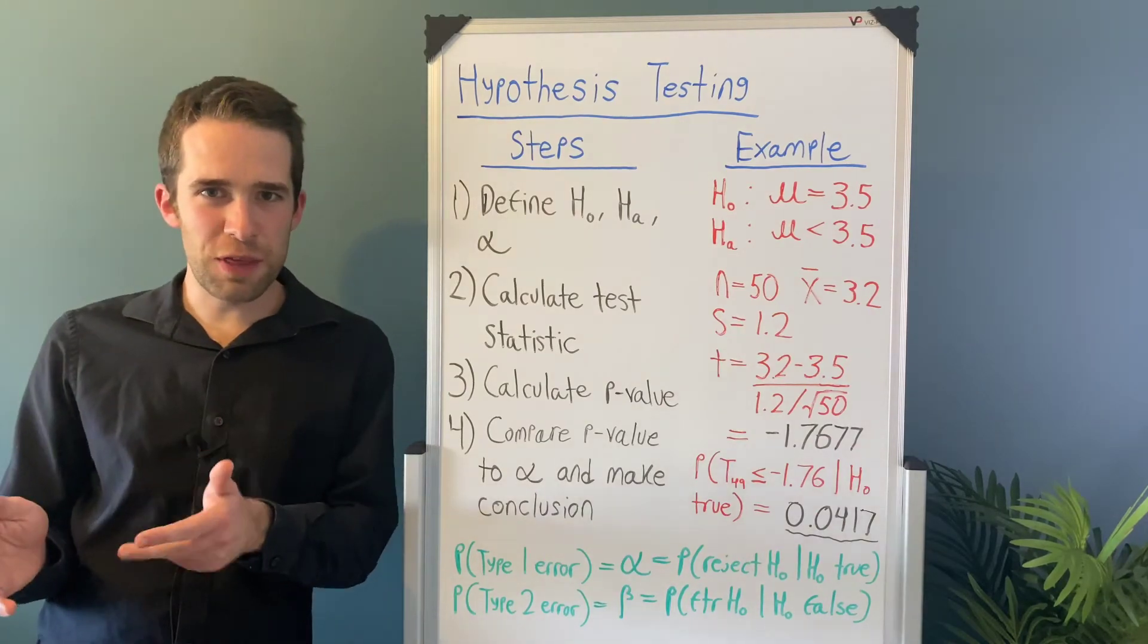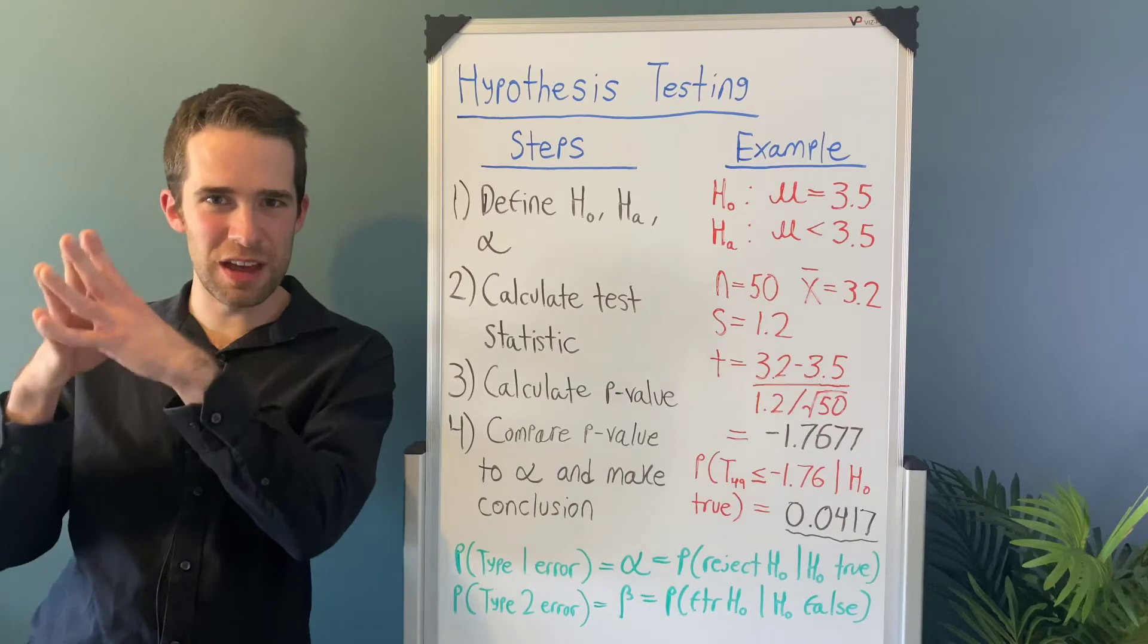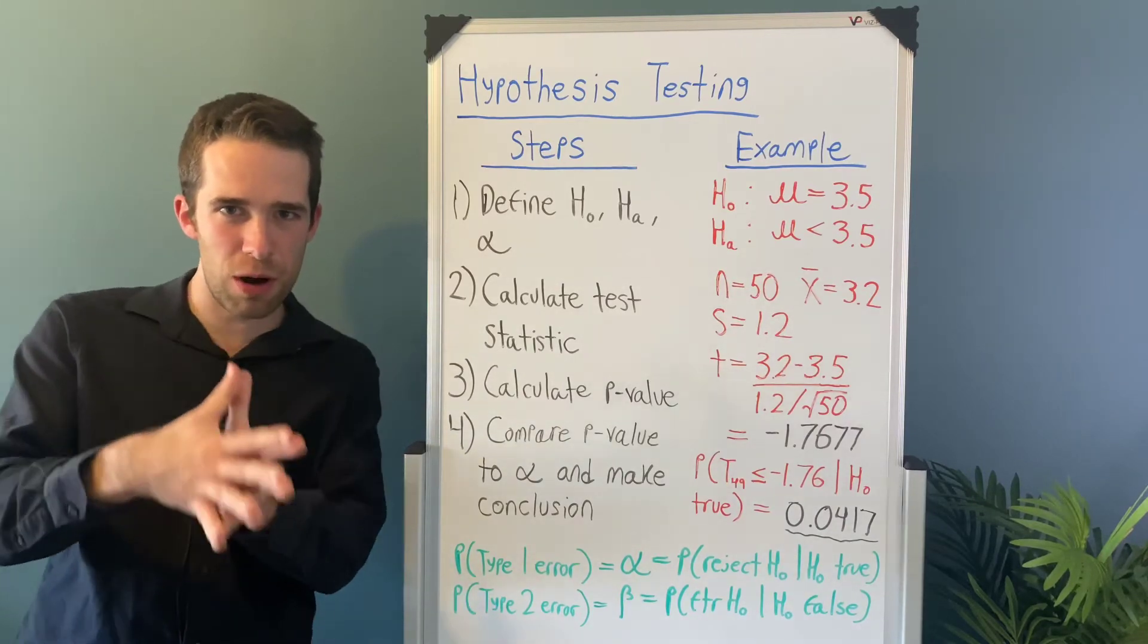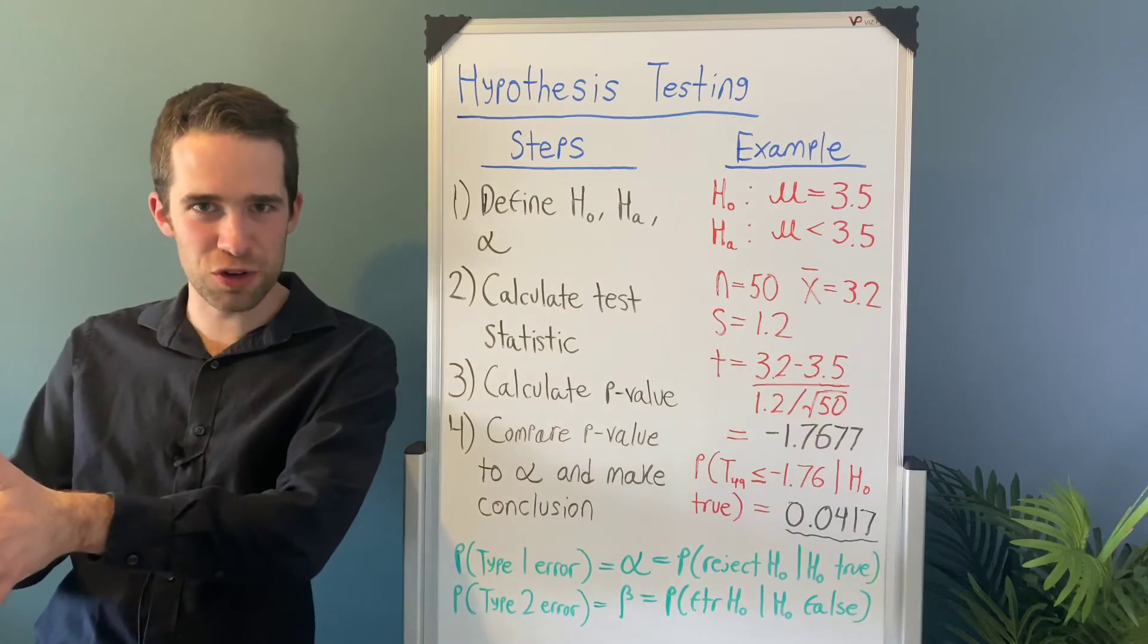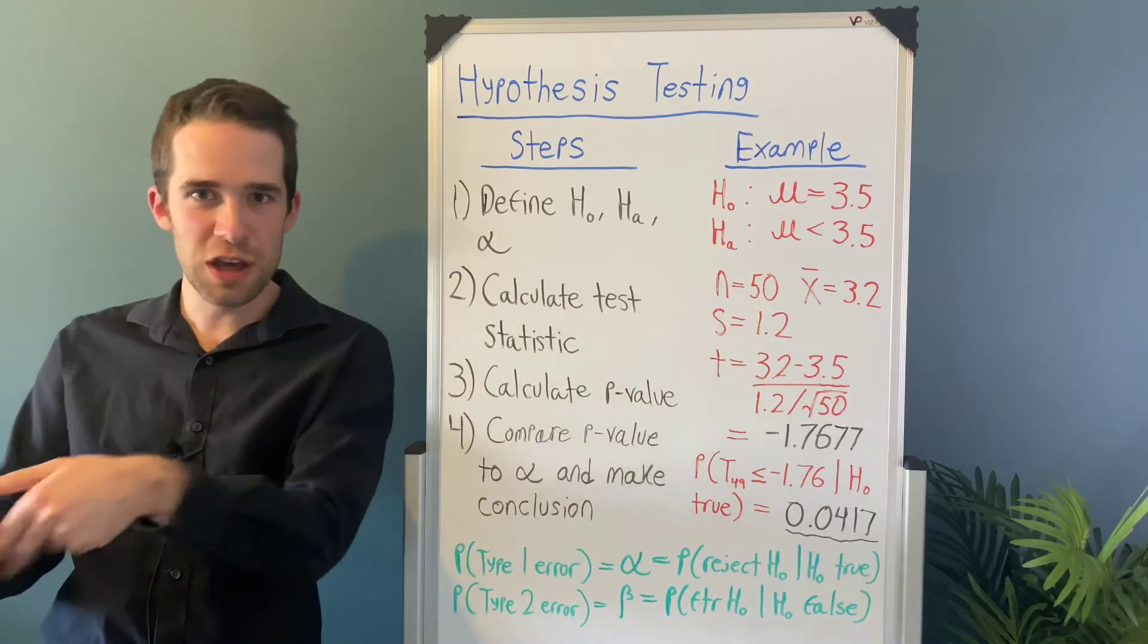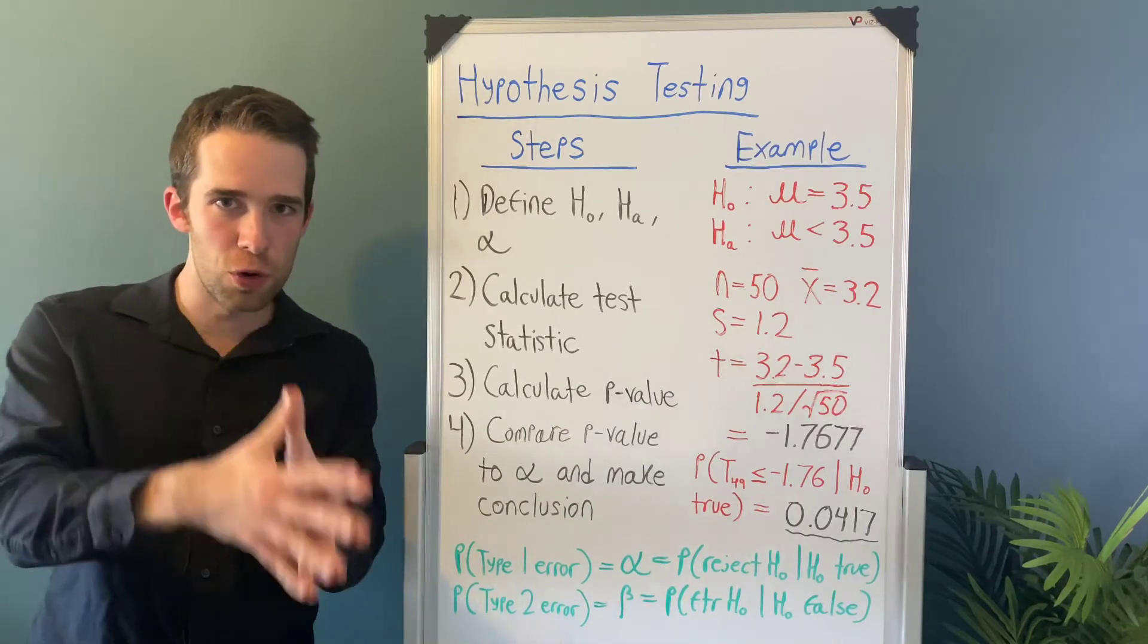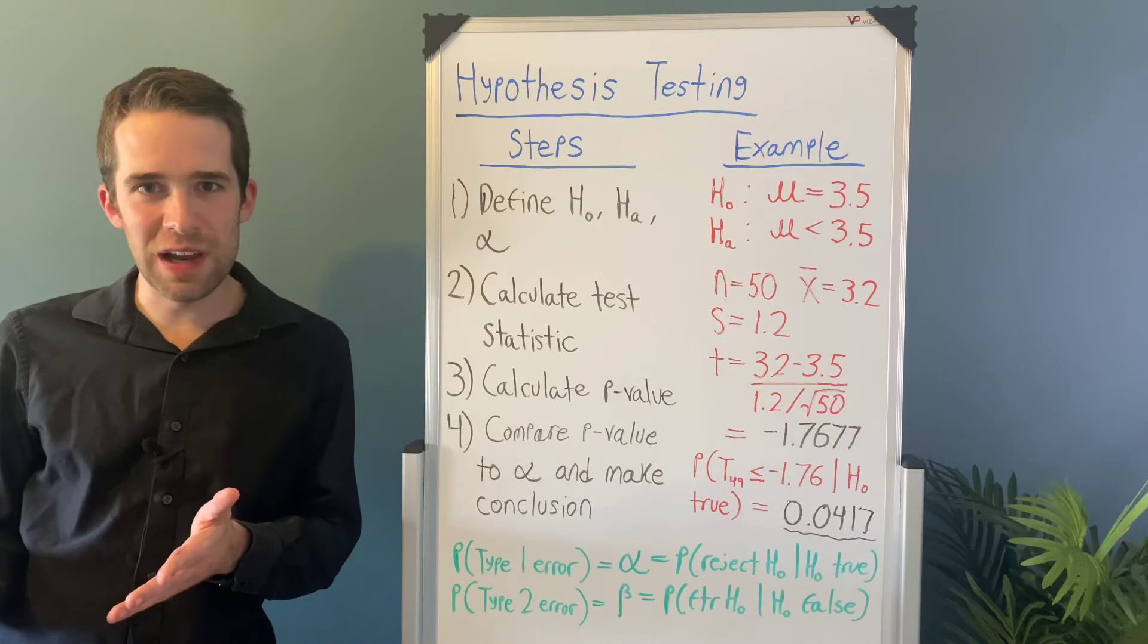The theoretical reason for that is a subject for a different video, but the long and short of it is that in the overwhelming majority of problems involving a population mean, you will use a t distribution. However, in instances involving a population proportion, you'll use a z statistic from a normal zero one distribution. So in our case here, we calculate a t statistic.